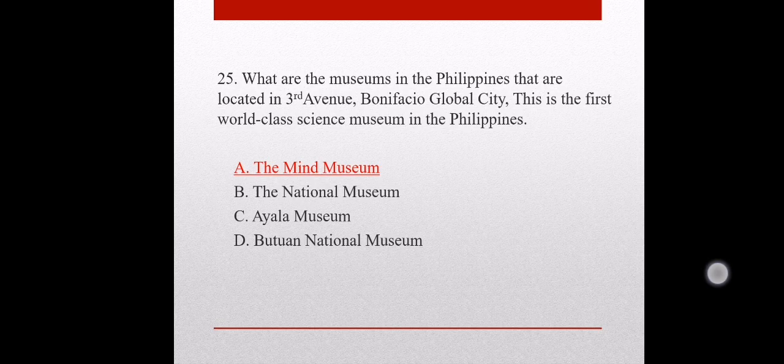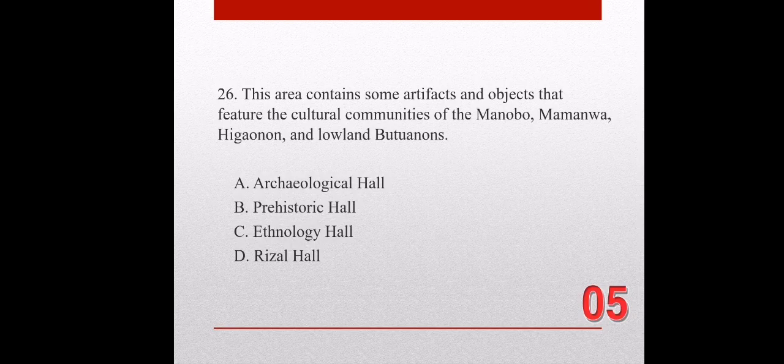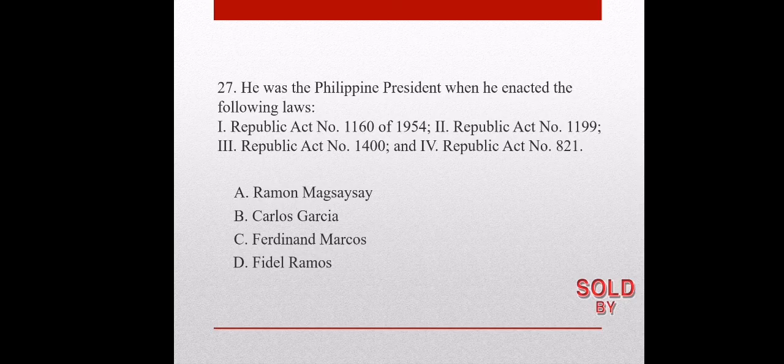Question number twenty-six. This area contains some artifacts and objects that feature the cultural communities of Damanobo, Mamanua, Higaonon, and Lowland Butuanons. A. Archaeological Hall. B. Prehistoric Hall. C. Ethnology Hall. D. Rizal Hall. The correct answer is letter C, Ethnology Hall.